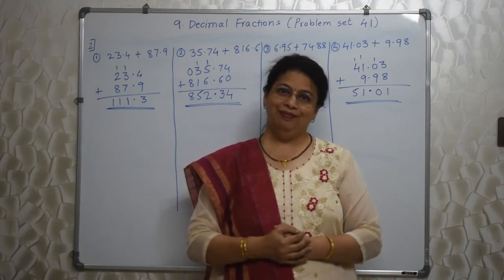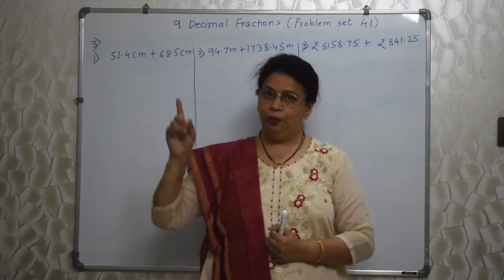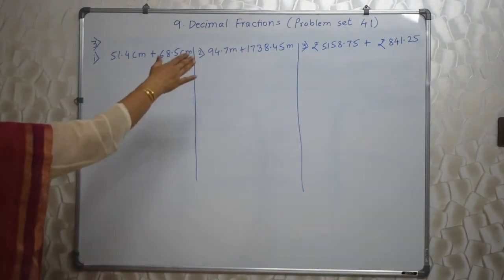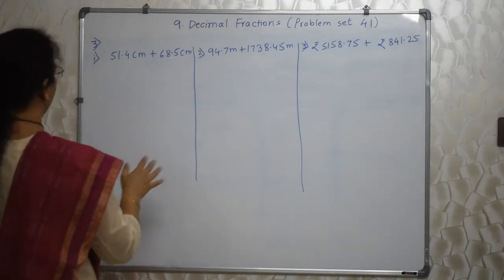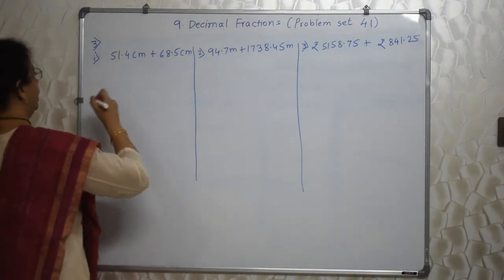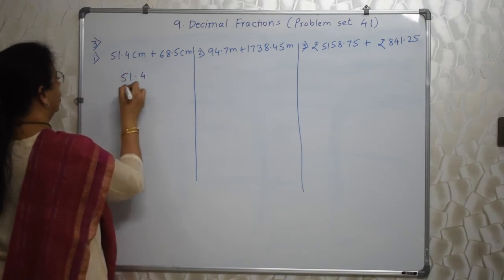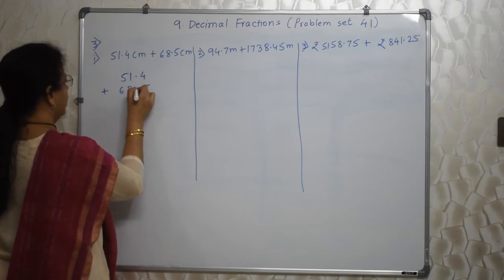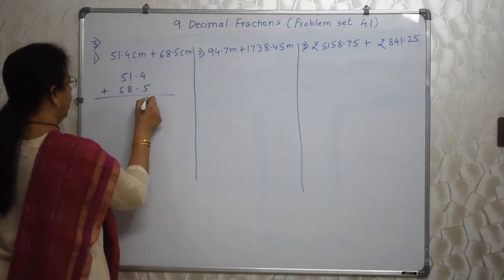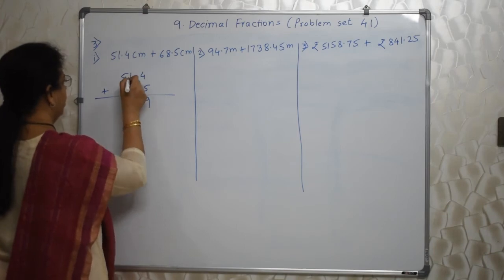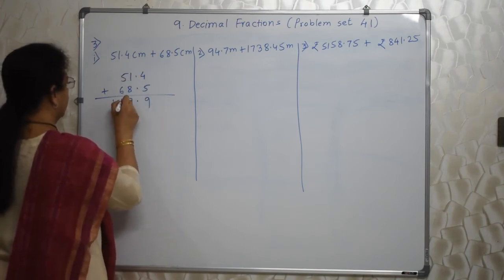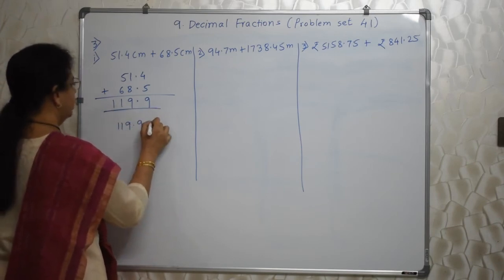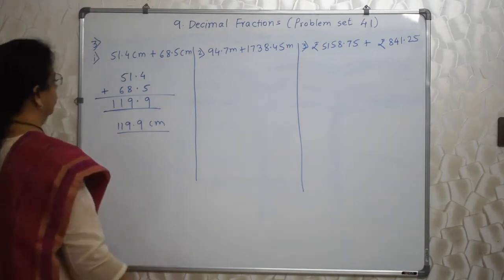Chalo, question number 3 bhi karte hain. Bacchon meinne third question bhi board pe likha hai. Idhar bhi humne addition hi karni hai. Lekin centimeter hai, meter hai, rupees hai — koi fark nahi karta. Rule for addition is same. So pahle likho: 51.4 plus 68.5. Decimal ke niche decimal, yeh apna rule hai. 4 plus 5, 9. Decimal ke niche decimal. 1 plus 8, 9. 5 plus 6, 11. So 119.9 centimeter — this is our answer.